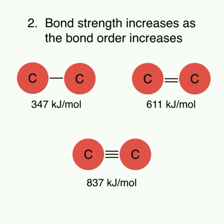The second factor that affects covalent bond strength is bond order. As bond order increases, meaning the number of bonds between two atoms increases, the bond strength increases. In our example, we can see the comparison of two carbons with single, double, and triple bonds, that is, with bond orders 1, 2, and 3.